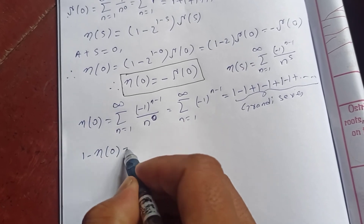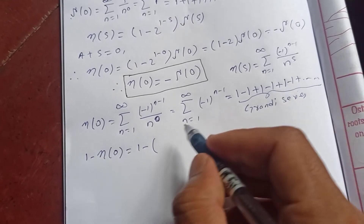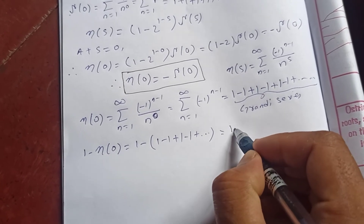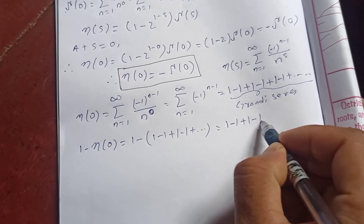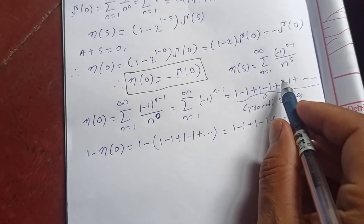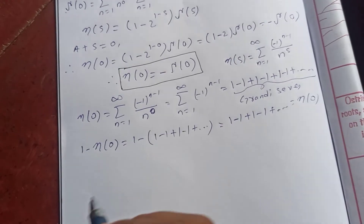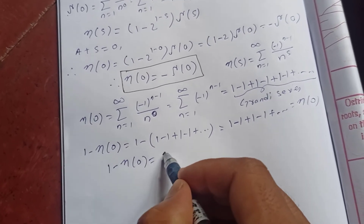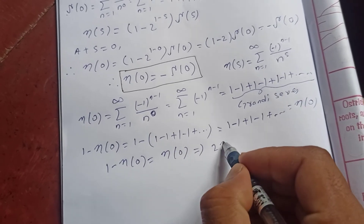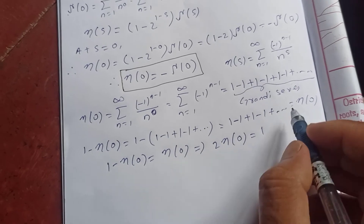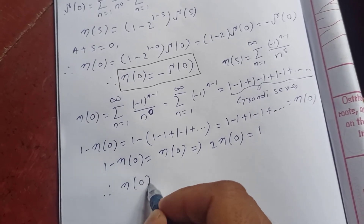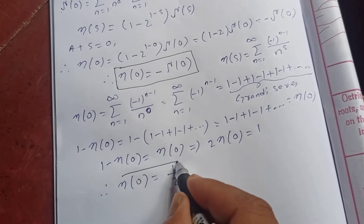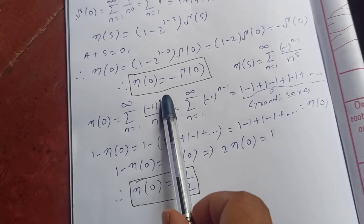To solve for eta of zero, consider one minus eta of zero. That equals one minus the series, which gives one minus one plus one minus one plus and so on. Opening the bracket: minus one plus one minus one plus and so on, which is again eta of zero. So one minus eta of zero equals eta of zero, giving two times eta of zero equals one, therefore eta of zero equals one half.